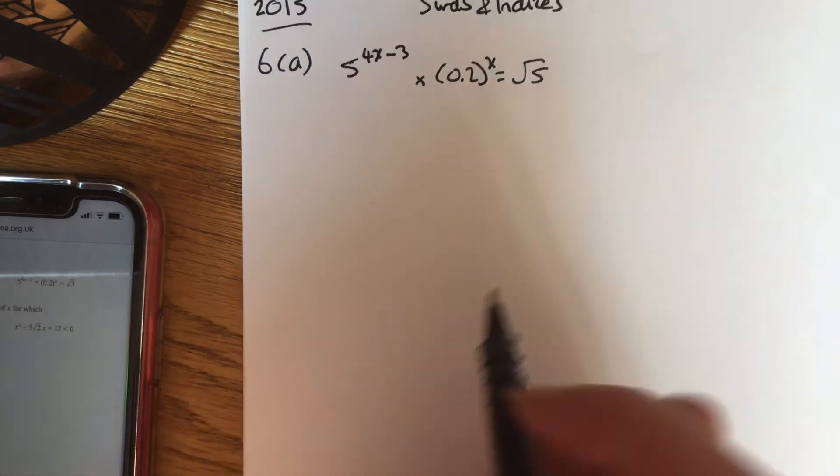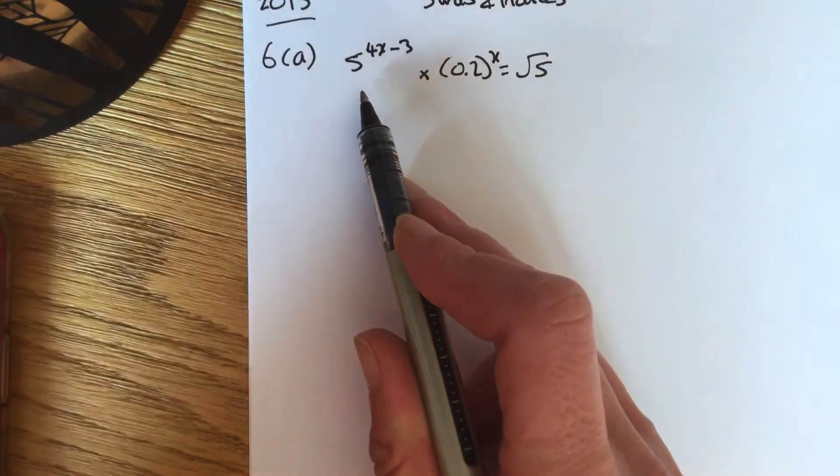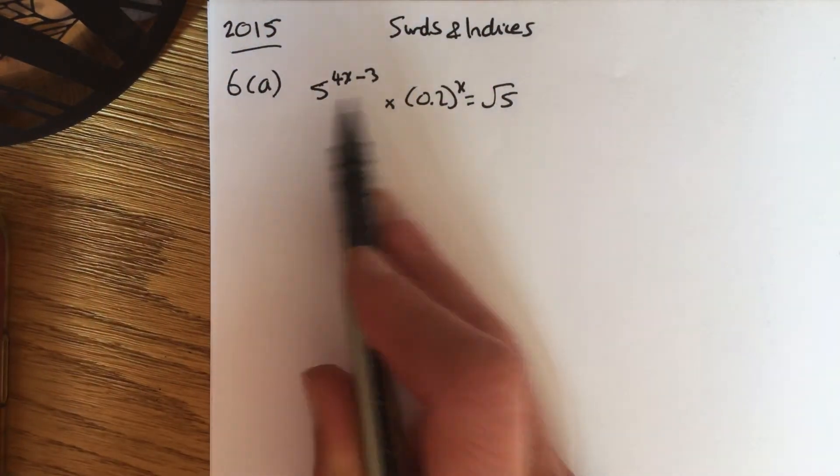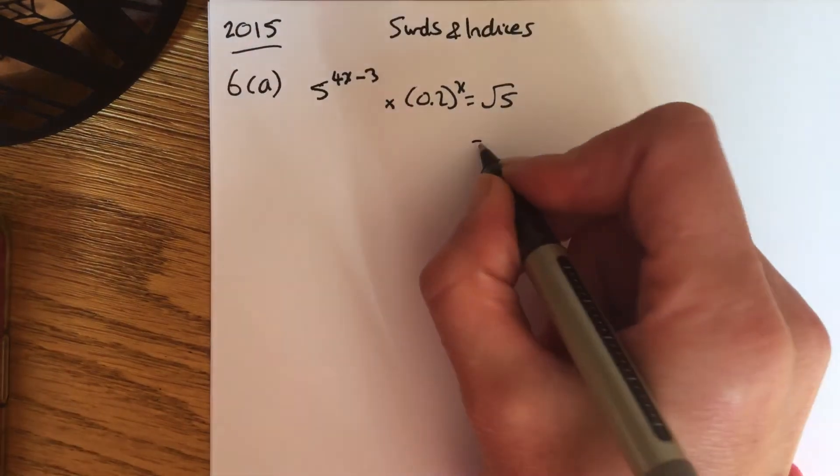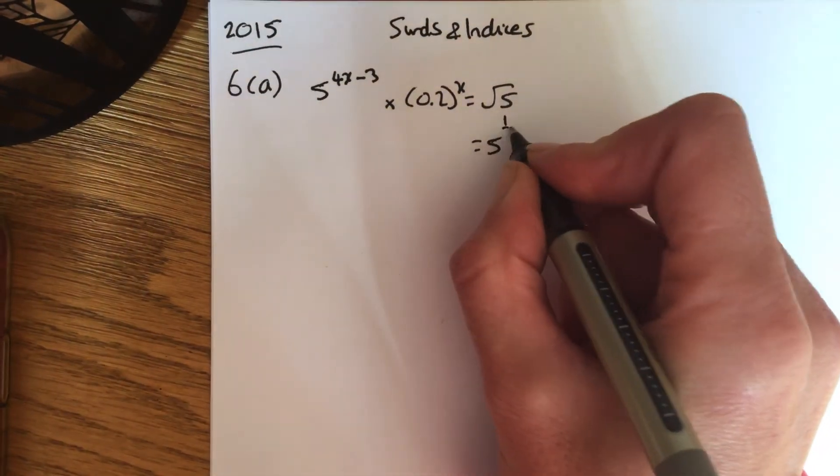As with all the index questions, you'll want it to have the same base number. So we've got a 5 here, we've got a 5 here, and remember that the square root of 5 is the power of a half.